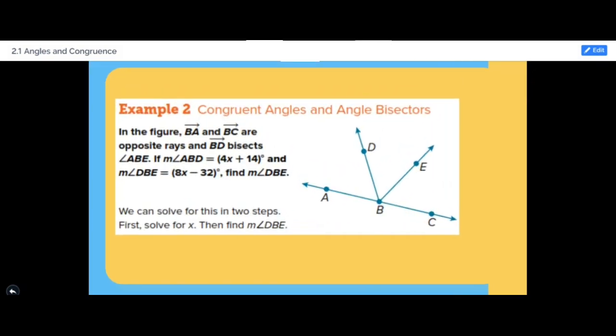Here is an example. In the figure, BA and BC are opposite rays and BD bisects angle ABE. If measure of angle ABD equals 4x plus 14 degrees, and measure of angle DBE equals 8x minus 32 degrees, find measure of angle DBE.